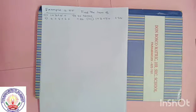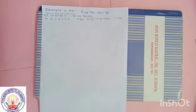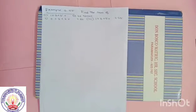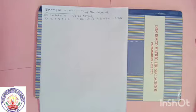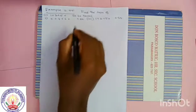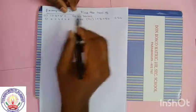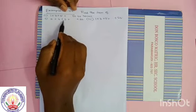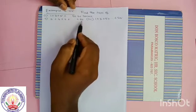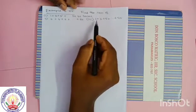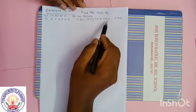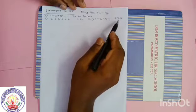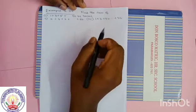Hi. Example 2.55. Find the sum of 1 plus 3 plus 5 plus dot dot dot to 40 terms. Second one: 2 plus 4 plus 6 plus dot dot dot plus 80. Third one: 1 plus 3 plus 5 plus dot dot dot plus 55.